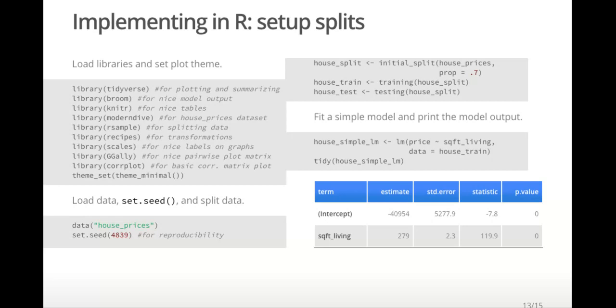The third set of code fits the model and prints the model output. I use the tidy function from the broom library to do this instead of the summary function some of you might be used to. This function puts the output in a tibble, a nice data set, so we can easily access whatever we want from it.